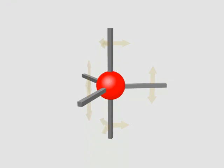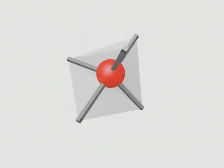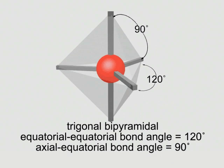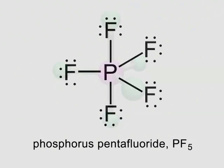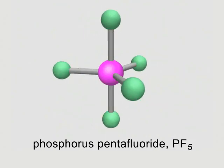Five electron groups minimize repulsions when they point to the corners of a trigonal bipyramid. Here, we find two ideal bond angles. Equatorial groups lie 120 degrees apart, and axial groups lie 90 degrees away from equatorial groups. When phosphorus reacts with excess fluorine, the trigonal bipyramidal molecule phosphorus pentafluoride forms.